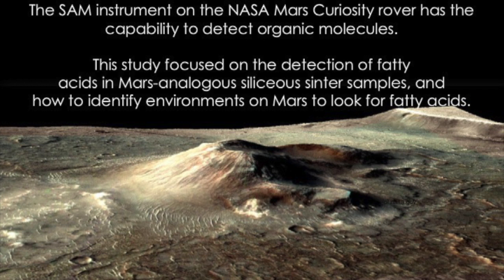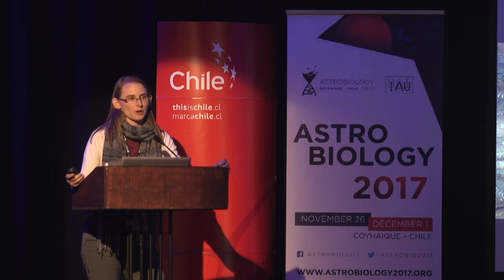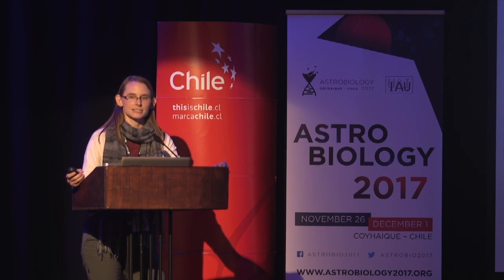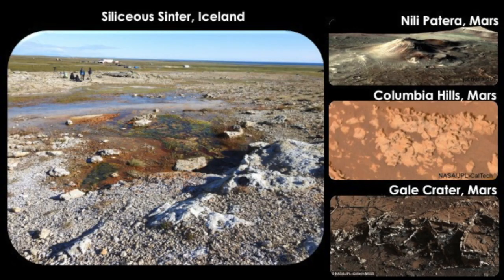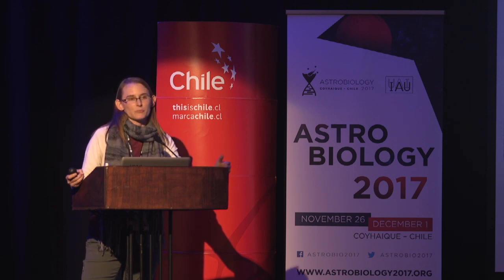The study I'm sharing today focuses on the detection of fatty acids in Mars analogous siliceous sinter samples and how we may be able to identify environments on Mars to look for fatty acids. This study works with siliceous sinter sites in Iceland. There are several environments on Mars made of siliceous sinter, including Nilipatera, the digitate stromatolites in Columbia Hills, and recent discoveries in Gale Crater by the Curiosity rover looking at potentially hydrothermally sourced silica.